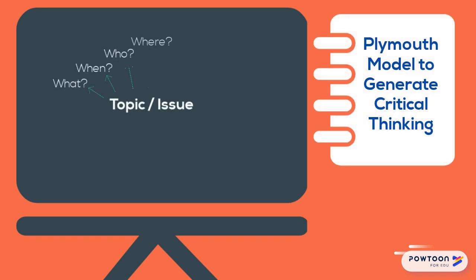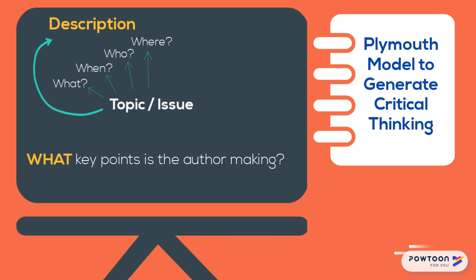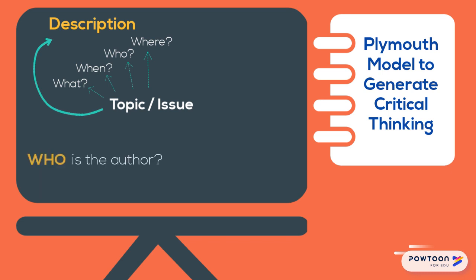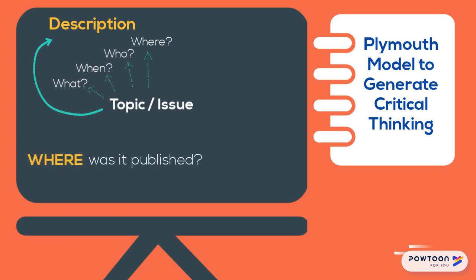You can use the what, when, who and where questions to better understand your topic or subject. This is the description phase. If you apply this to reading, you may ask: what key points is the author making? When was it written? Who is the author and what is their expertise? Or where was it published?